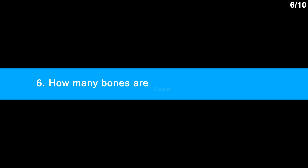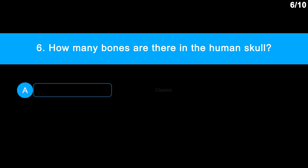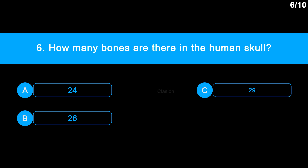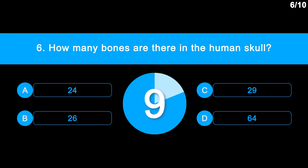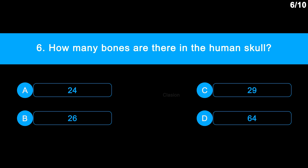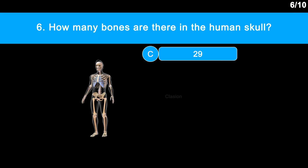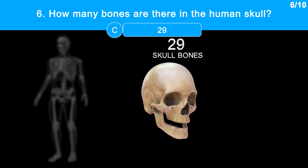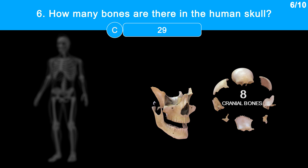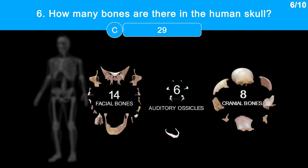Question 6: How many bones are there in the human skull? Option A, 24. Option B, 26. Option C, 29. Option D, 64. The correct answer is option C, 29. Let's count them. There are a total of 29 bones in the skull: 8 cranial bones, 14 facial bones, 6 auditory ossicles, and 1 hyoid bone.